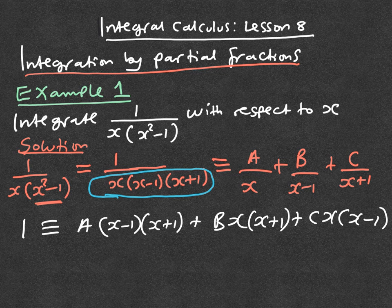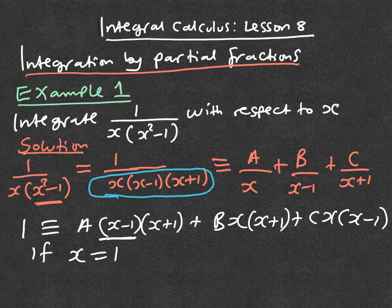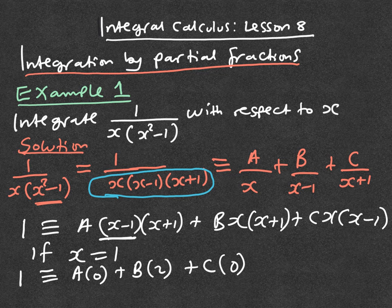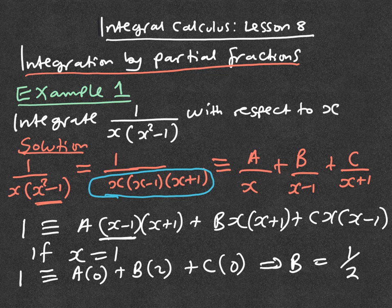To find the value of B, we look for what makes a bracket zero. If x equals 1, we get 1 is equivalent to A times 0, plus B times 2, plus C times 0. Therefore B is one half, that is B equals 1 over 2.